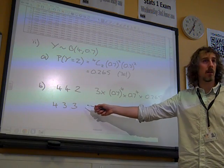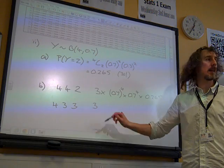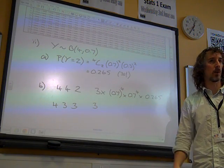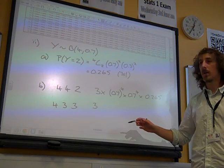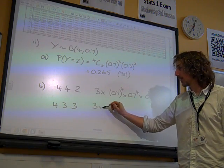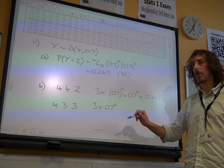And this one here, again, this could happen in any order three ways. It could be 4, 3, 3, or 3, 4, 3, or 3, 3, 4. And that is a 4 again. So that's 0.7 to the 4, the probability of the 4.